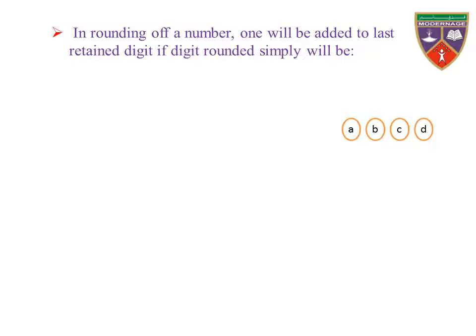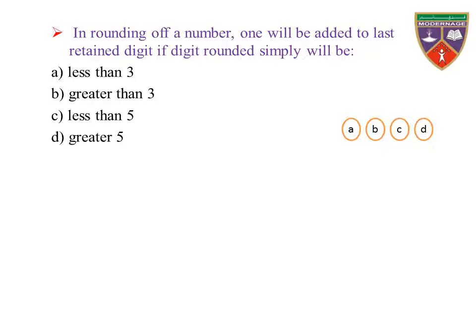In rounding of a number, 1 will be added to the last written digit if the digit rounded off is — option A: less than 3, B: greater than 3, C: less than 5, D: greater than 5. The correct answer is D: greater than 5.